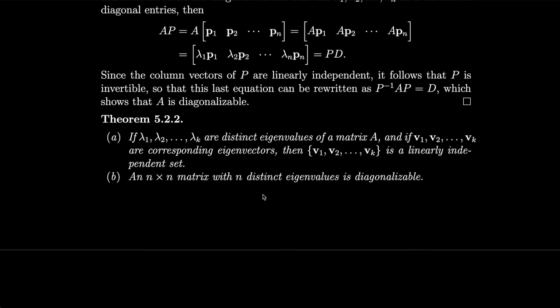Next, if lambda 1 through lambda k are distinct eigenvalues of matrix A, and if V1 through Vk are corresponding eigenvectors, then V1 through Vk is a linearly independent set. Consequently, an n by n matrix with n distinct eigenvalues is diagonalizable.